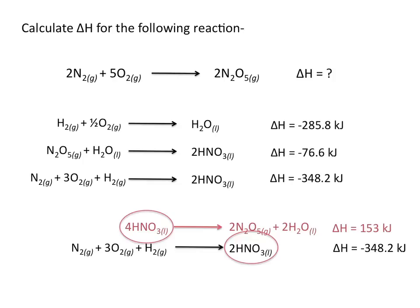The 4 moles of HNO3 will eventually cancel out with the 4 moles of HNO3 on the reactant side in our first modified equation. And when we multiply the equation by 2, we also need to multiply the delta H value by 2.